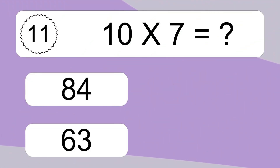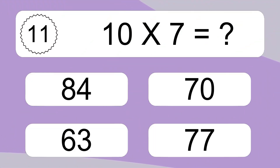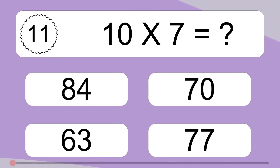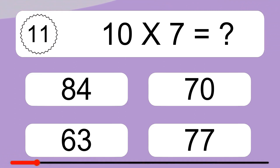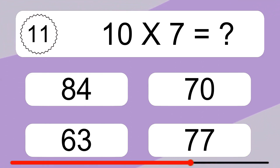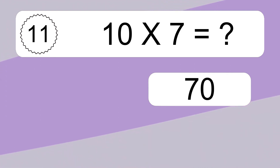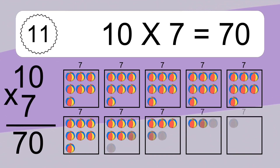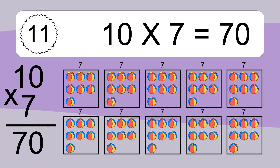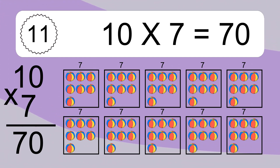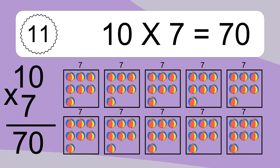10 times 7 equals what? 10 times 7 equals 70. We have 10 boxes, and each box has 7 colorful balls inside. If you count all the balls in all the boxes together, you will have 10 times 7 balls. This equals 70 balls.